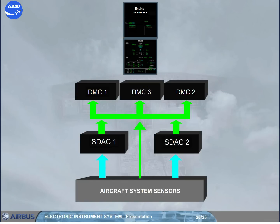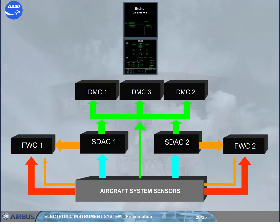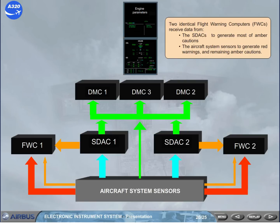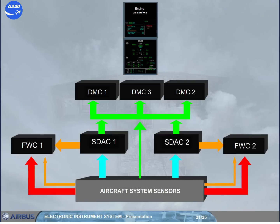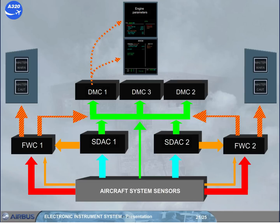Two identical flight warning computers, FWC, receive data from the SDACs to generate most amber cautions, and from the aircraft system sensors to generate red warnings and remaining amber cautions. The FWCs then supply the DMCs for the display of alert messages, the attention-getters, and the loudspeakers for all alerts.